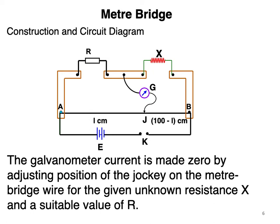The length of AJ, suppose it is L centimeters, then length of JB will be (100 - L) centimeters because AB is 1 meter long wire. We adjust the jockey position J so that there is balance in the Wheatstone Bridge - no current passes through the galvanometer. As you shift J, the resistance on left and right side of J will change, and the galvanometer deflection will be zero once R/X equals the ratio of resistances of AJ and JB.